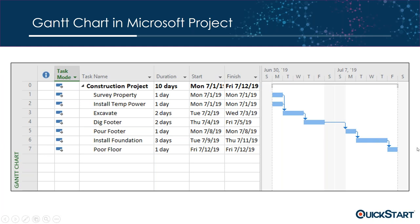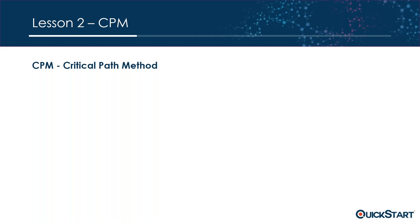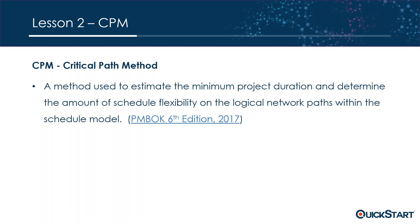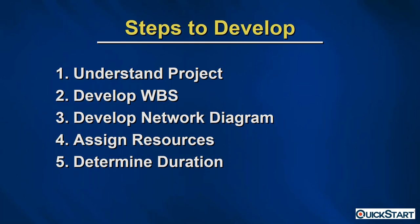Moving forward, lesson two is about CPM — Critical Path Method. The definition from the PMBOK is: a method used to estimate the minimum project duration and determine the amount of schedule flexibility on the logical network paths within the schedule model. Key words: minimum project duration and flexibility. Let's dive into CPM a little further.